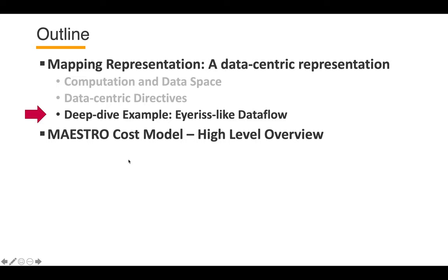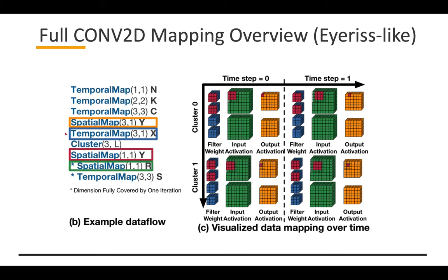Using those three directives, we can describe more complex data flows and mappings. We will deep dive into one example: an IRIS-like dataflow. This is a full CONV2D mapping of the IRIS-like accelerator — let's take it step by step.